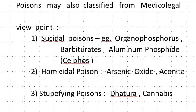Poisons may also be classified from the medical point of view, i.e. Suicidal Poison, Homicidal Poison and Stupefying Poison. Suicidal Poisons include Organophosphorus, Barbiturates, Aluminium Phosphide (i.e. Sulphos). Homicidal Poisons include Arsenic Oxide and Aconite. Stupefying Poisons include Datura and Cannabis.